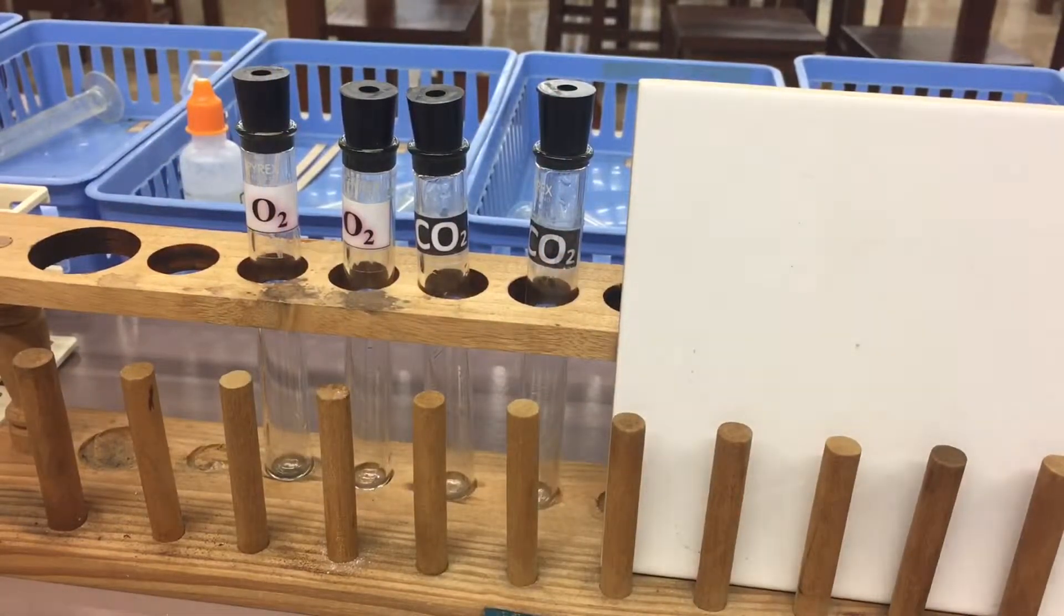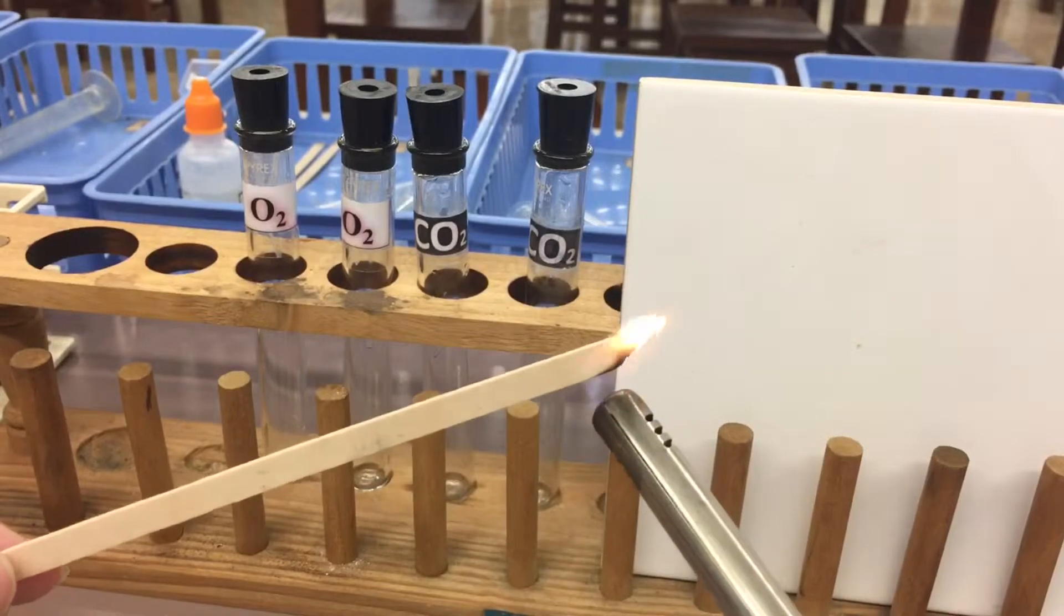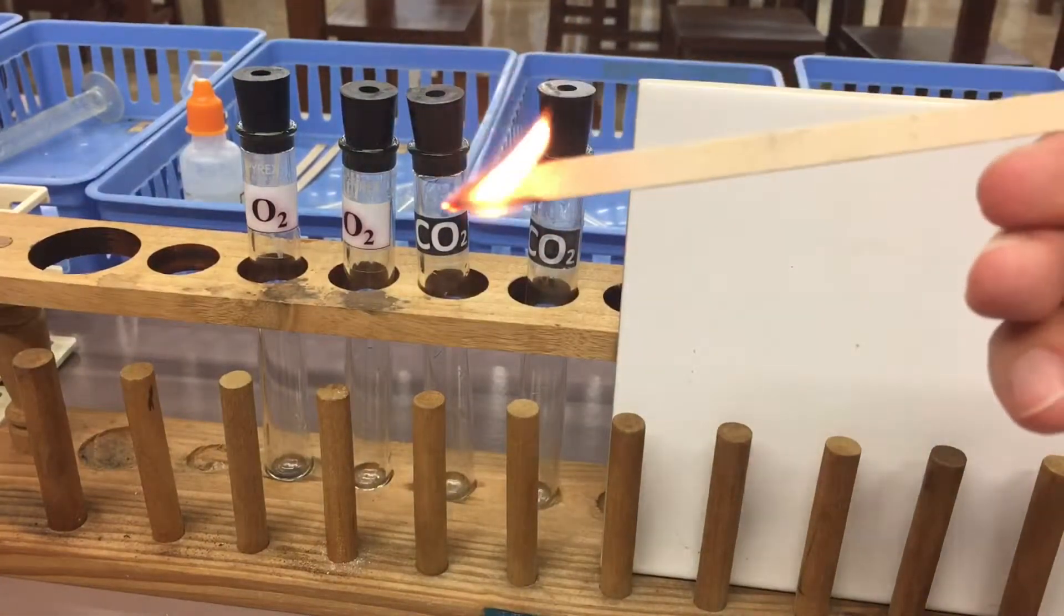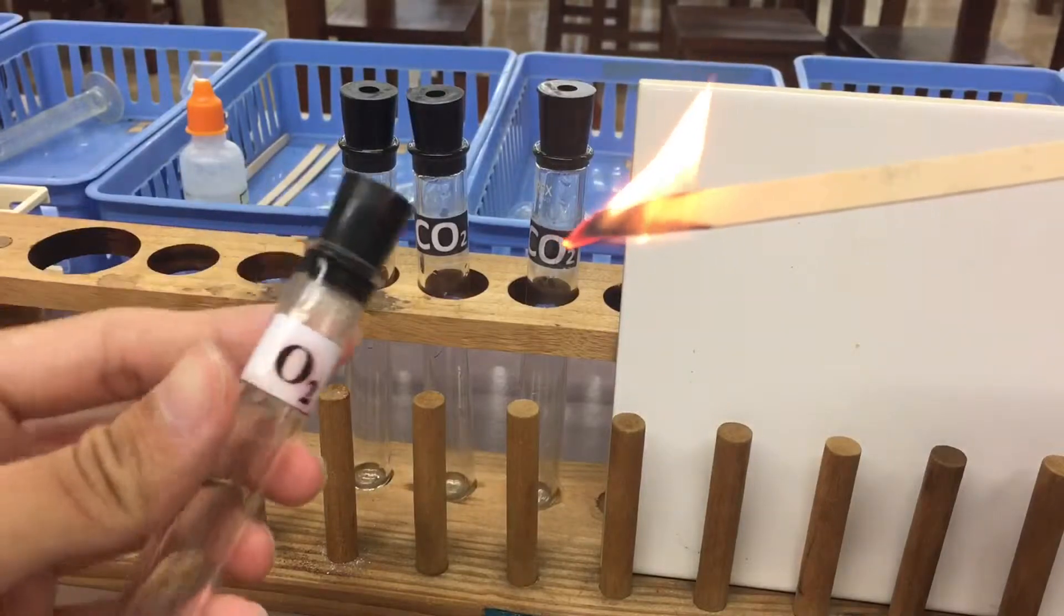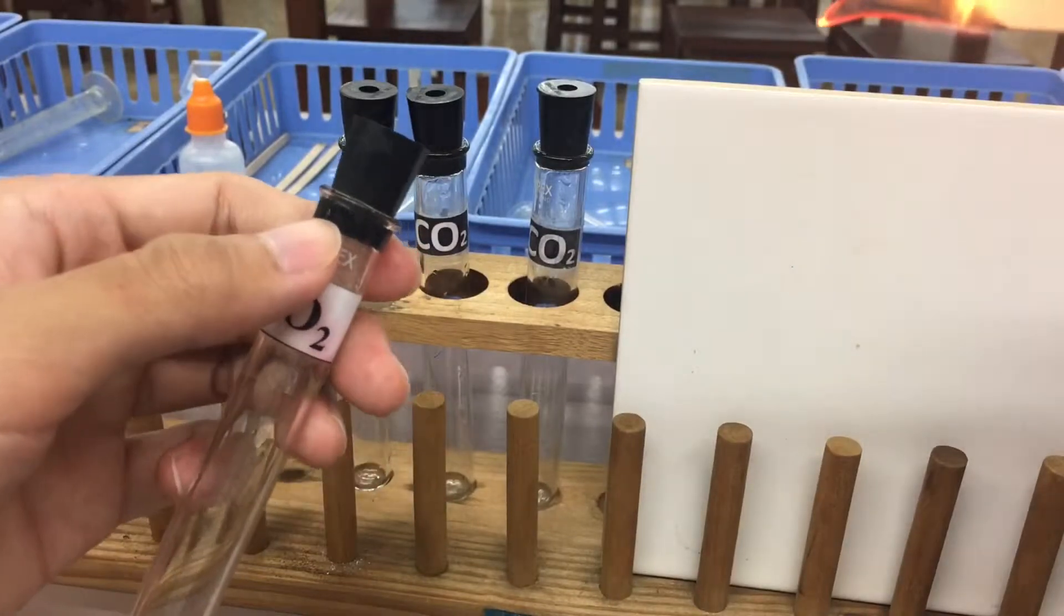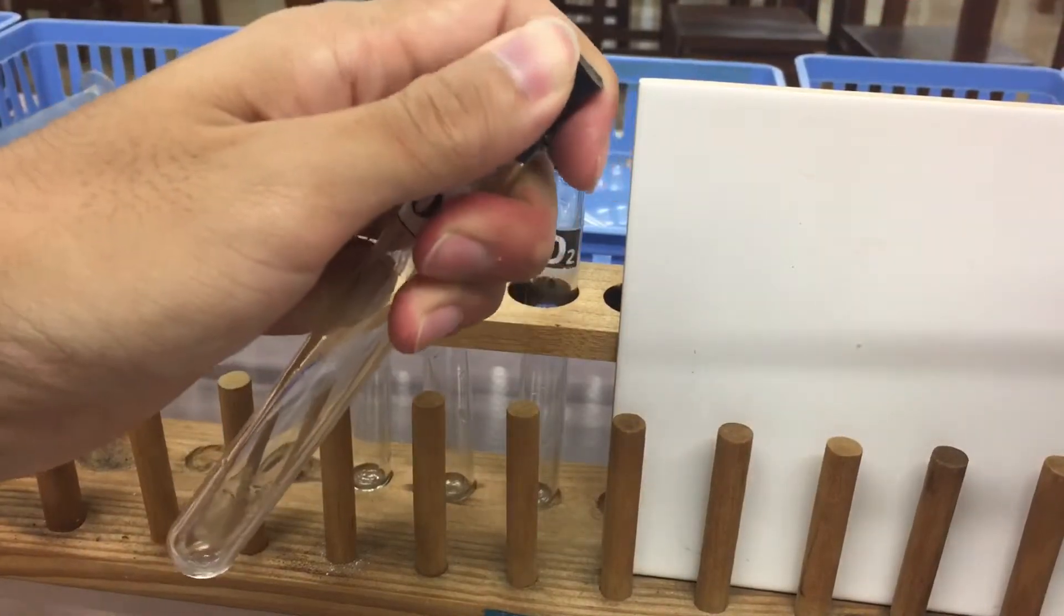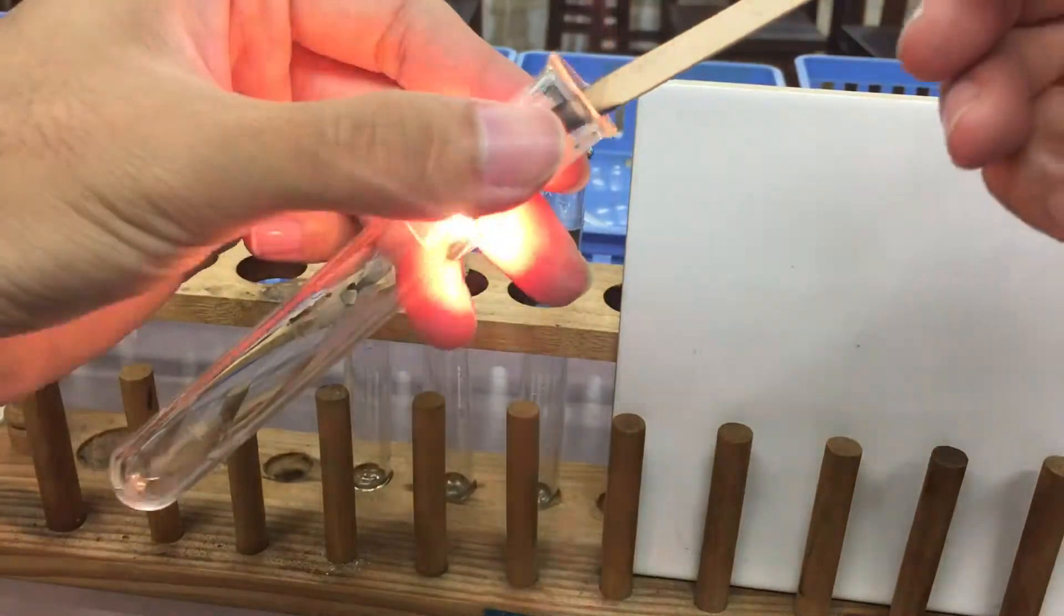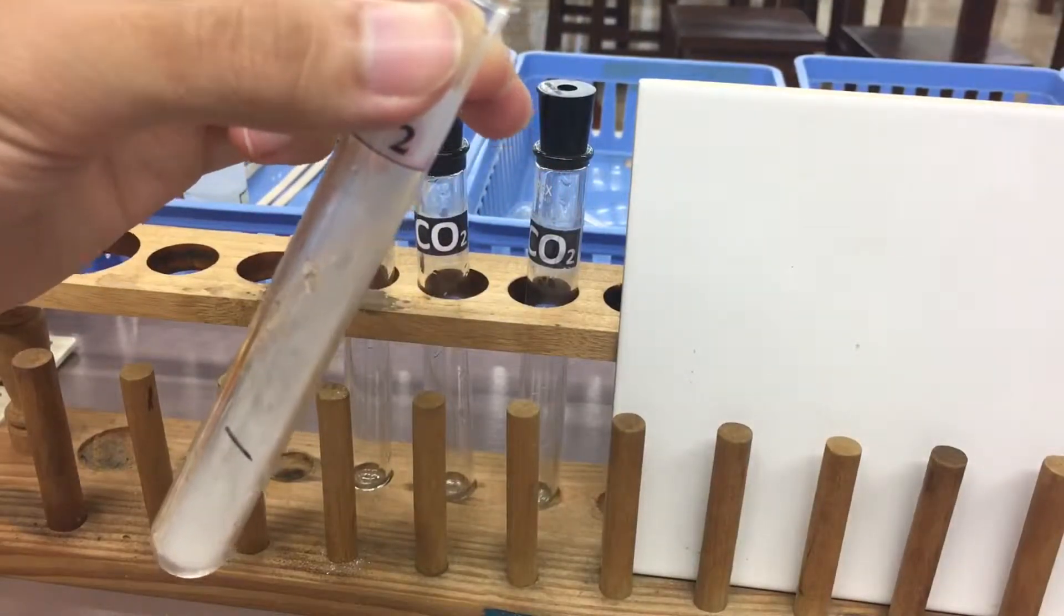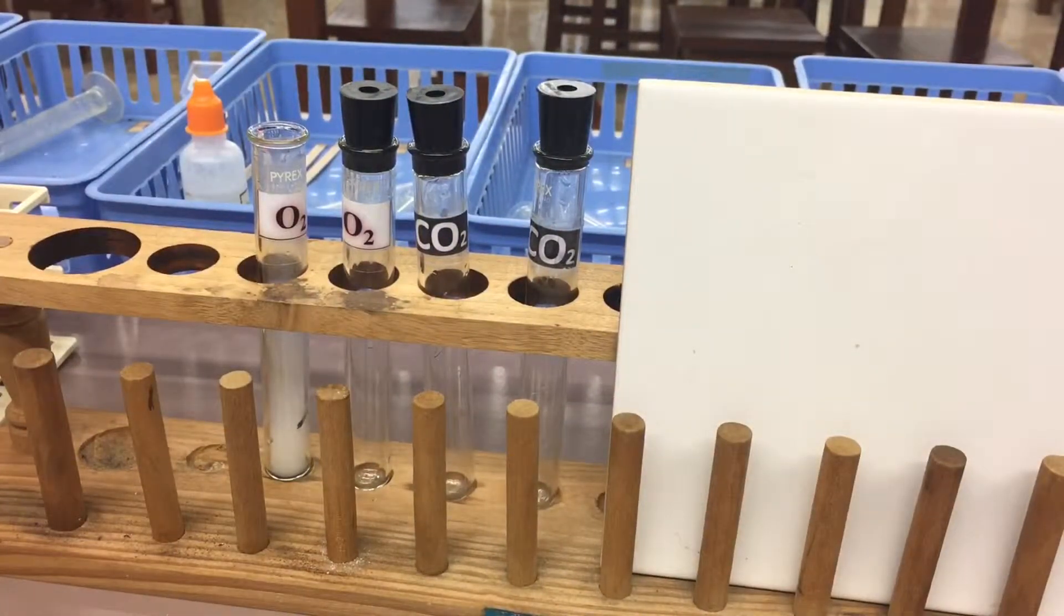The first one I want to show you is a burning splint. Here is the burning splint, and here is the oxygen. After I remove the stopper, put the burning splint into it as soon as possible. Observe the flame. You can see that the flame burns more brightly.